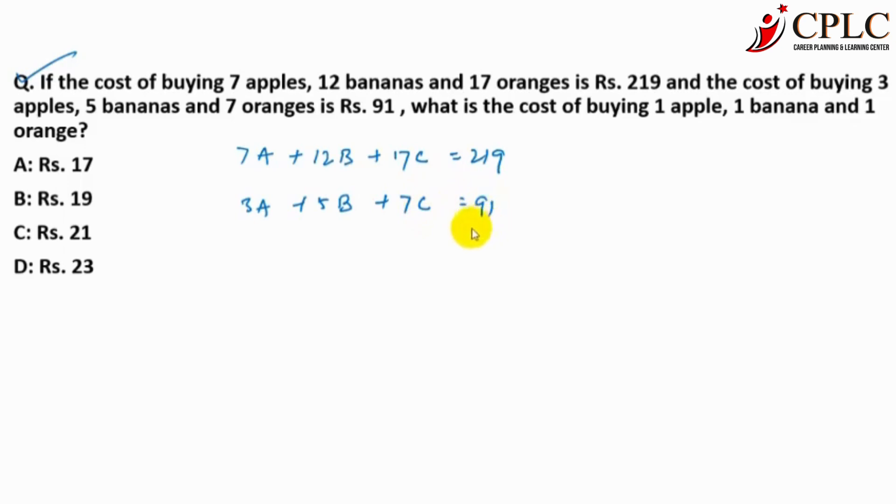And you need to find out the cost of 1 apple, that is A plus B, 1 banana, and 1 orange, that is C. So A plus B plus C is the question mark. How do we solve? We have only 2 equations, so you need to observe here.